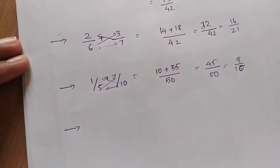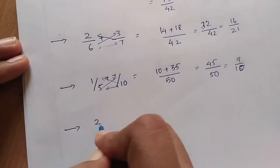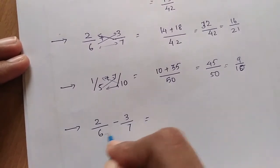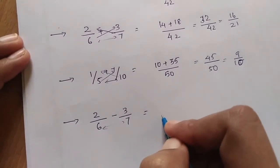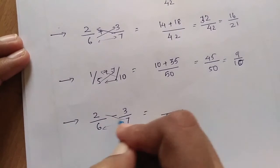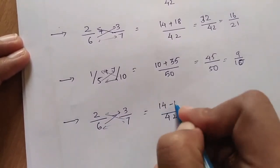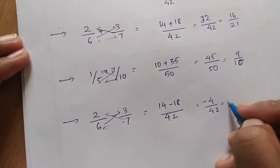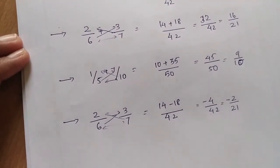Then let's go to subtraction: 2/6 minus 3/7. Similar method: multiply denominators to get 42, then cross multiply: 14 minus 18 which equals minus 4/42, which equals minus 2/21.